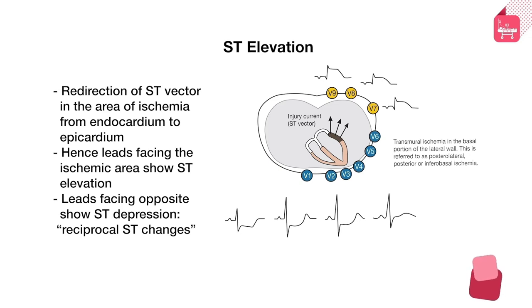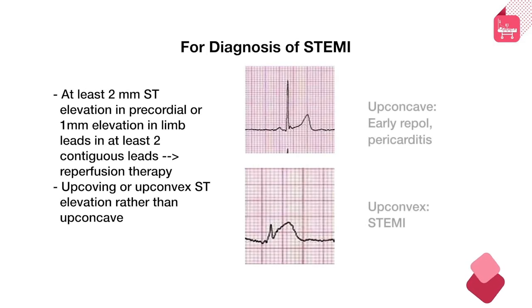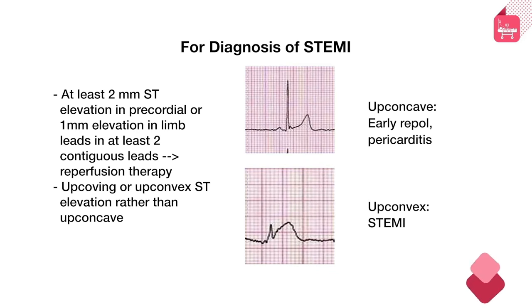Leads facing the opposite direction will show the opposite finding — ST depression. So in an ECG with ST elevation in certain leads, you can find ST depression in opposite-facing leads, called reciprocal ST changes. For the diagnosis of STEMI, the traditional criteria for reperfusion therapy (thrombolysis or urgent angioplasty) require at least 2 mm of ST elevation in precordial leads or 1 mm in limb leads, generally in at least 2 contiguous leads.